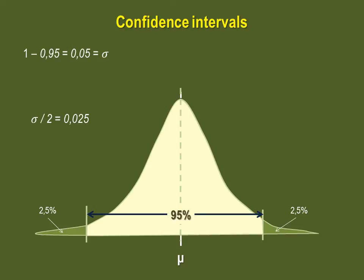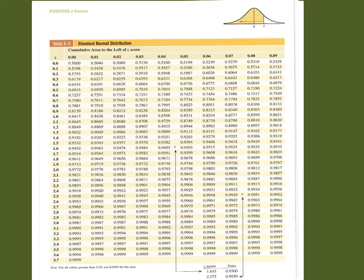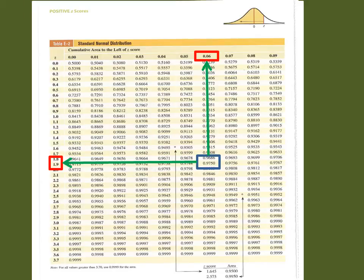So our lower Z score is minus 1.96. We must now find the Z score that delimits the higher portion of the confidence interval, knowing that the area to the left of the Z score is 1 minus 2.5%, which is 97.5%. Because our limit is to the right of 0, we should use the positive Z score table. So we must first locate 0.9750, and then determine the corresponding Z score, which is positive 1.96.